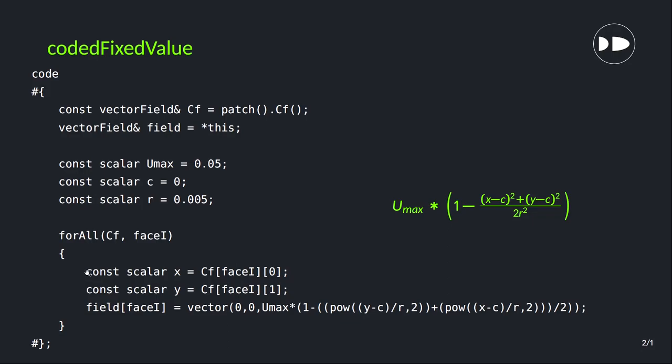Now again we define two scalar fields - x and y - so that will call the x and y direction of cell centers. So center of the face, then 0 stands for x and 1 stands for y. This x and y are just names, the same way we defined Umax, c, r, cf, and field in the previous section.